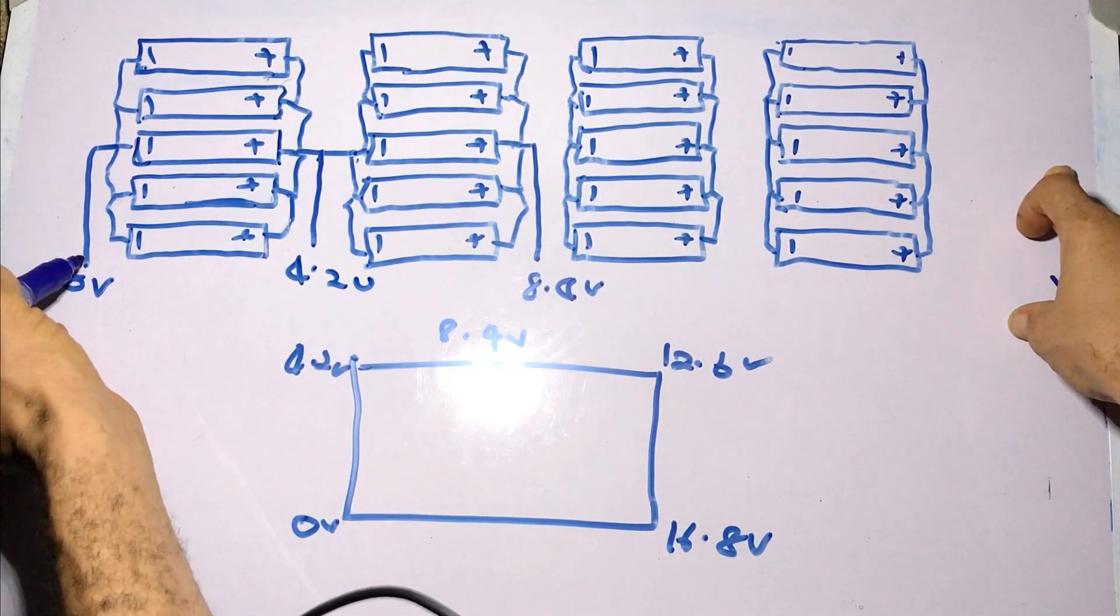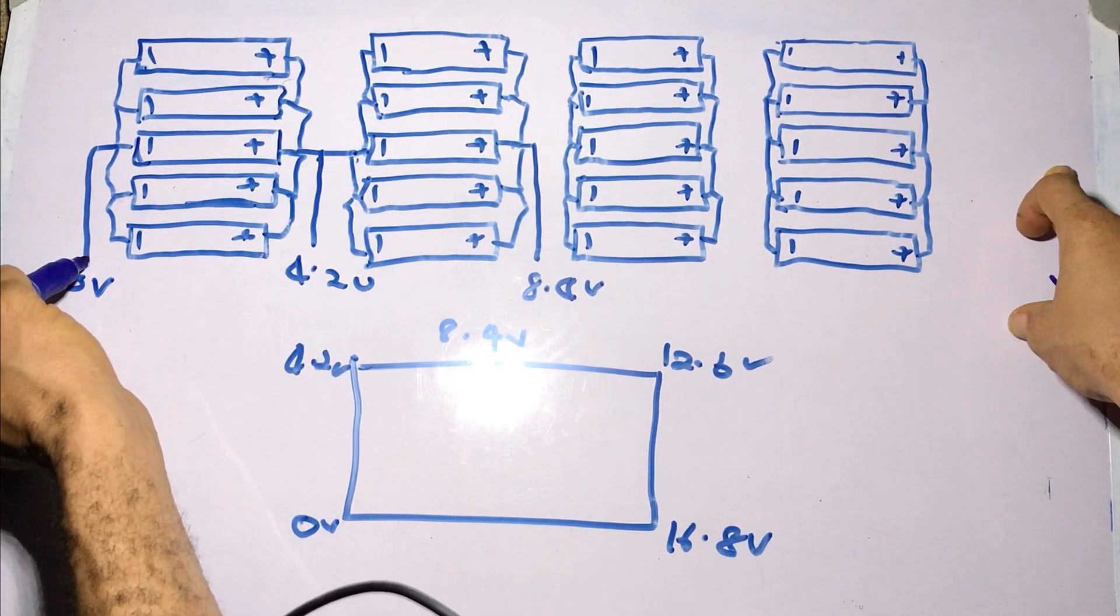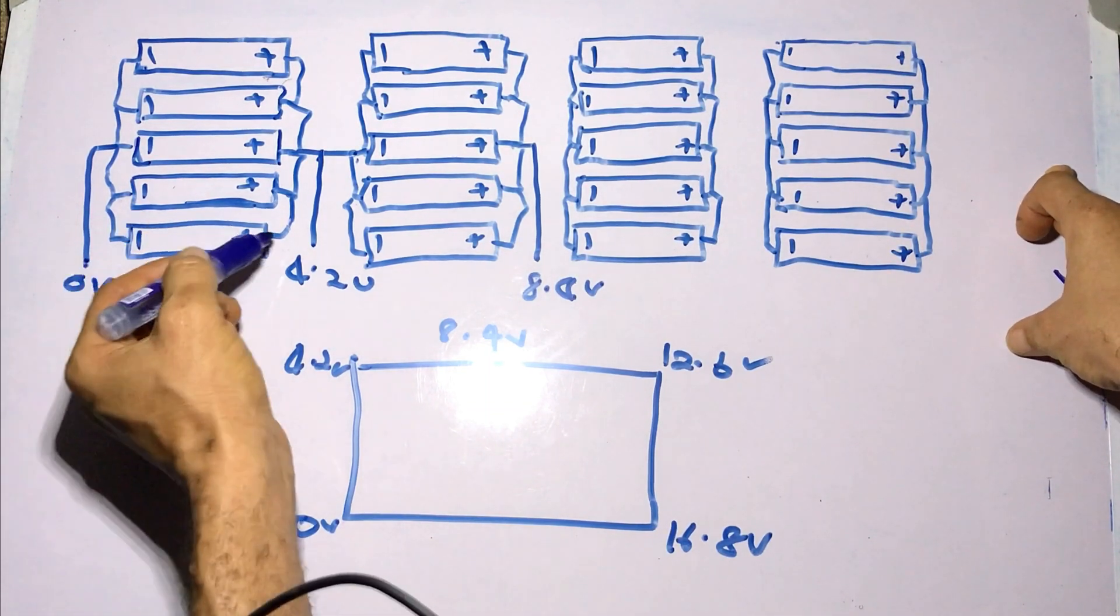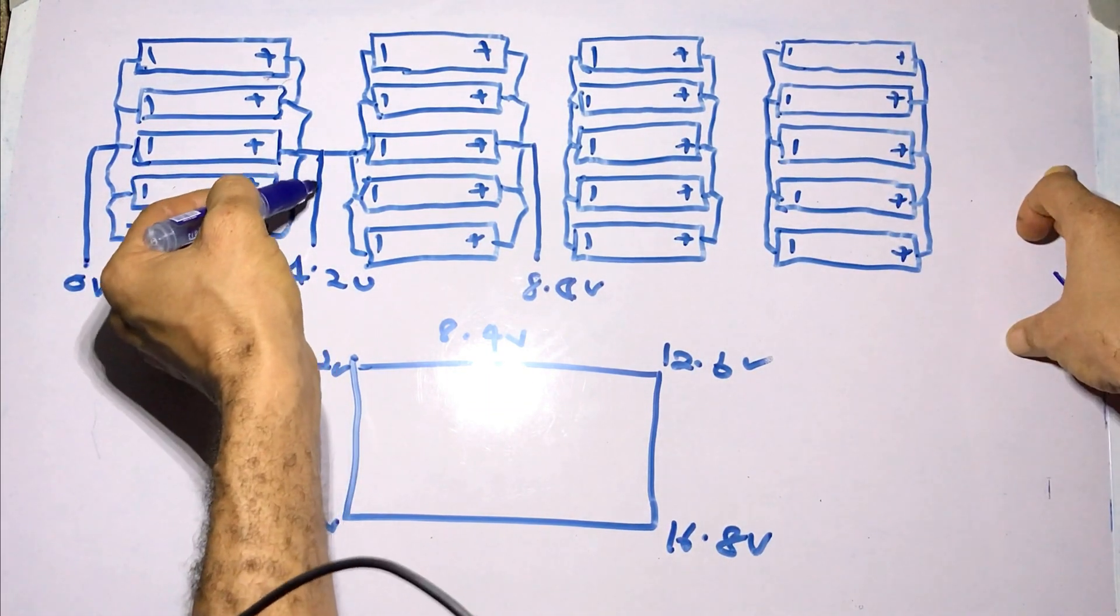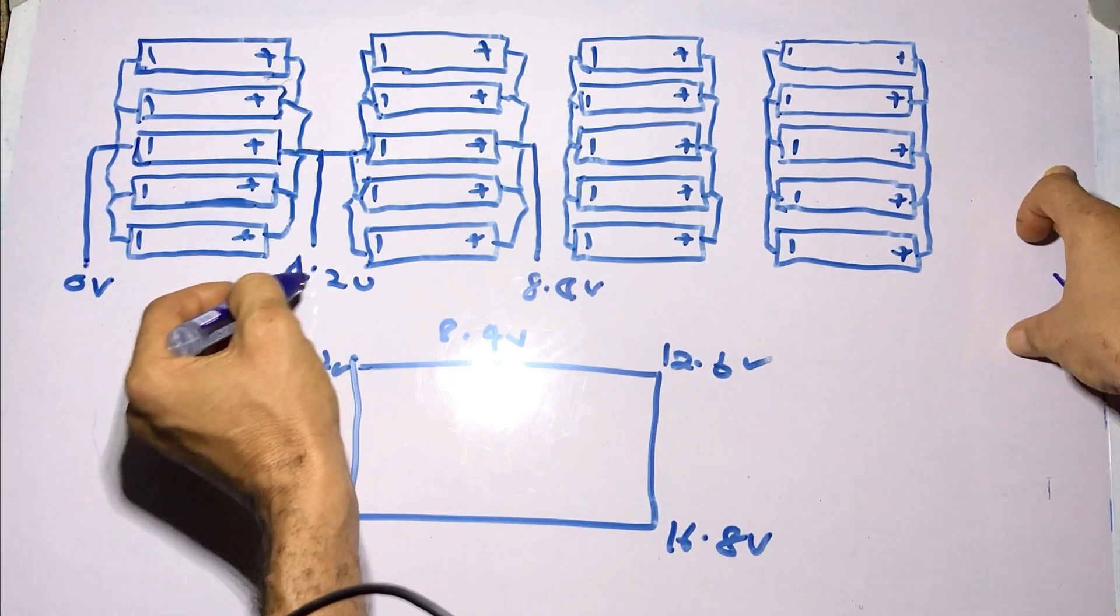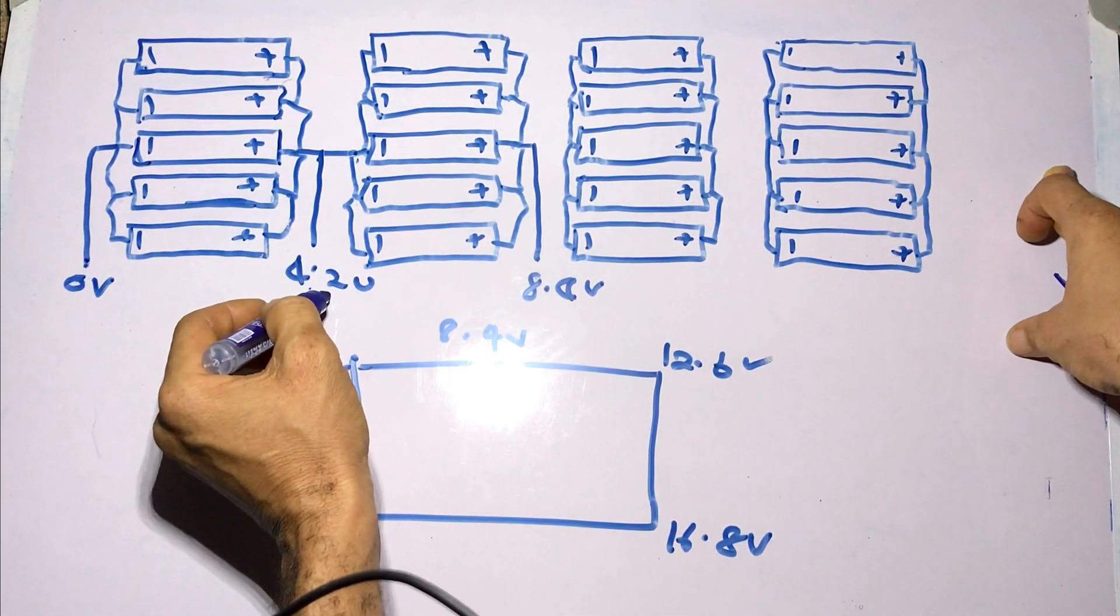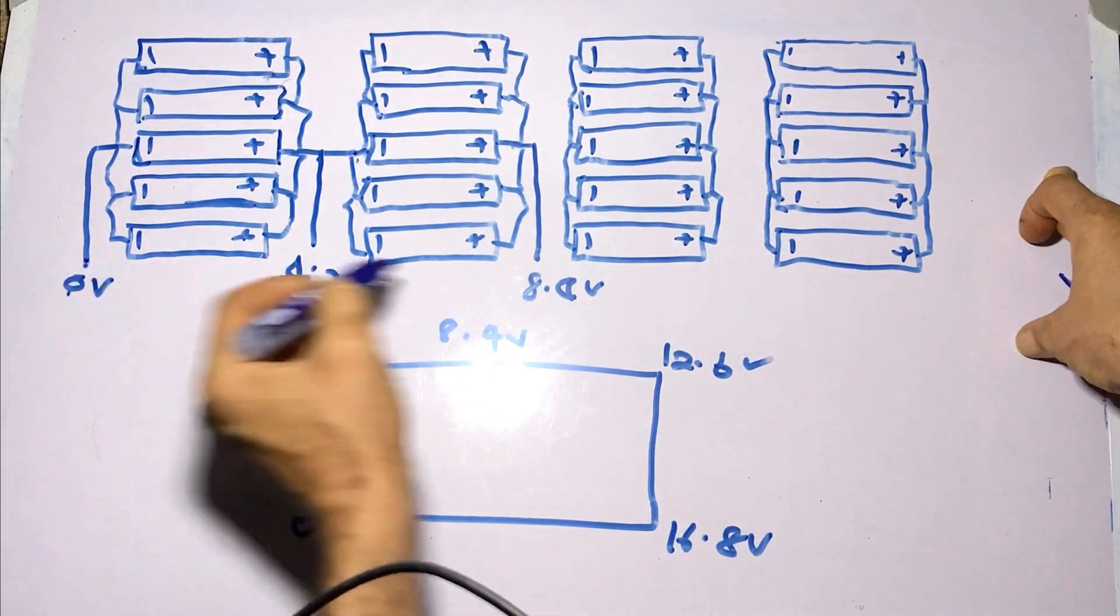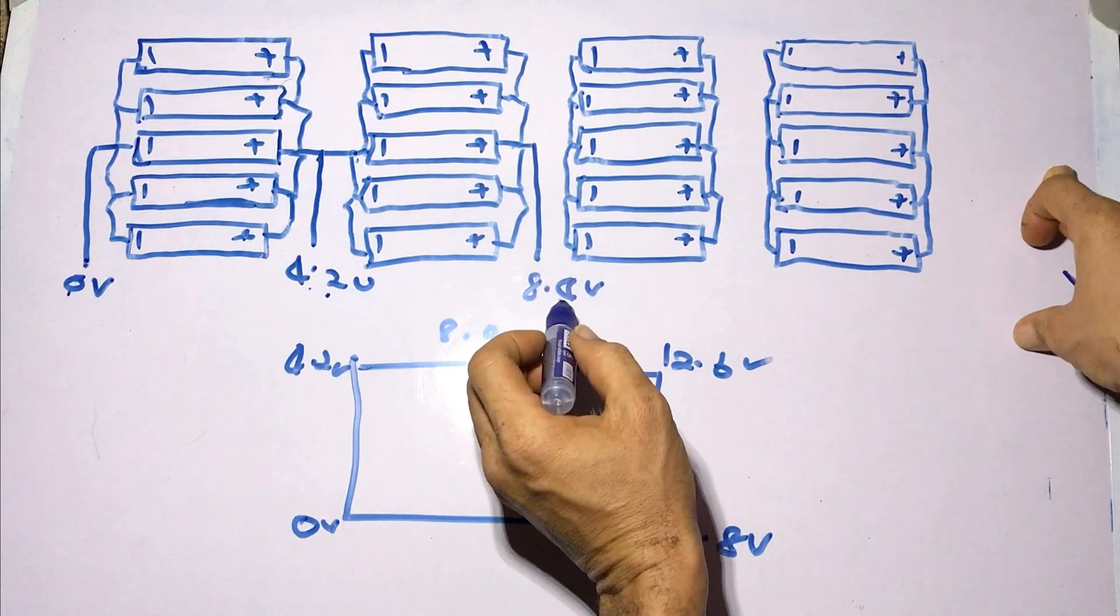So if you place the black probe of a multimeter on this negative connection of the battery, or negative pole of the battery, and you measure voltage across the first cell pack with your digital multimeter red probe, you get 4.2 volts here. And if you go across this while having your black probe here, you get 8.4 volts here.